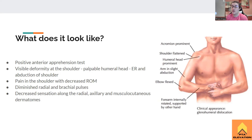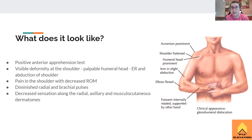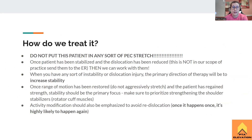Another concern is decreased sensation because the dislocation could be pressing on the axillary nerve, the radial nerve, or the musculocutaneous nerve that runs down the front of the arm. This is why they need immediate medical attention to reduce the dislocation and get it back in place — we don't want loss of nerve or blood supply.